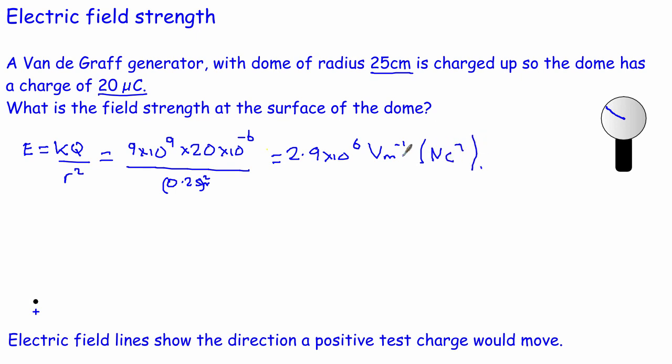That's it for electric field strength. We had a quick look at electric field lines and the different patterns for radial fields (positive and negative charges) and uniform fields. We defined electric field strength and looked at how to calculate E and force for both uniform fields (E = V/d, F = EQ) and radial fields (E = KQ/R²). To find the force on a charged particle in a radial field, you use the same F = EQ approach. Thank you very much for watching, and I'll see you again soon.